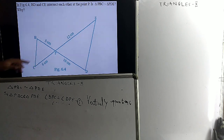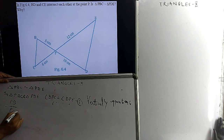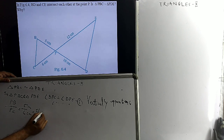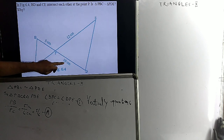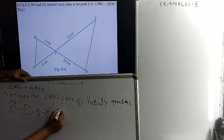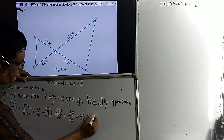Now, the ratio of these two sides — PB by PC — that is equal to 5 cm by 6 cm, which is 5/6. Let us say this is equation A. And the ratio of PD and PE — that is equal to 10 cm by 12 cm, which simplifies to 5/6. Let us say this is equation B.